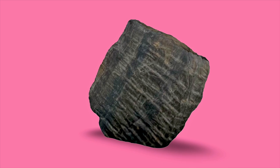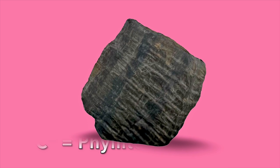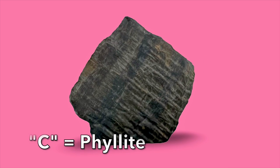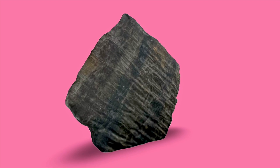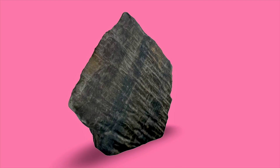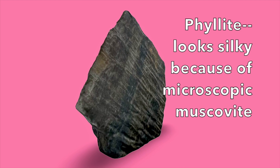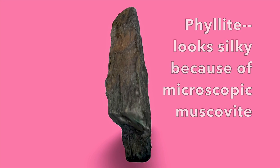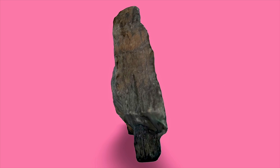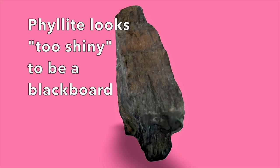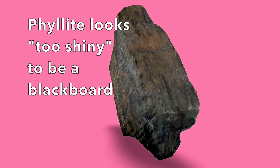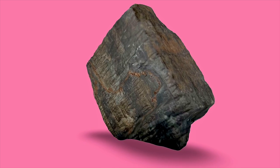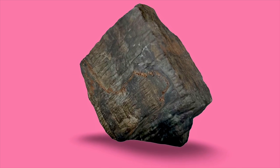And now it's time to reveal the final contestant. If your answer is Rock C, take a bow! It is phyllite. Phyllite is exposed to only slightly more heat and pressure than slate, but it lives within less heat and pressure than schist. Phyllite is a rock that is just right for muscovite — and this answer is just right for this quiz.